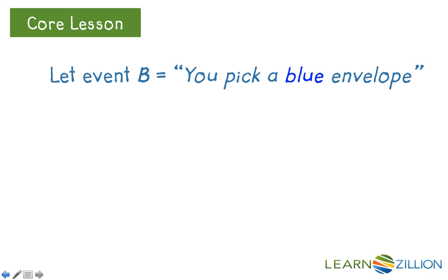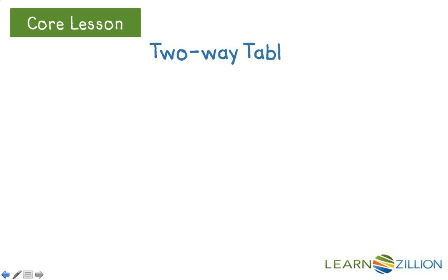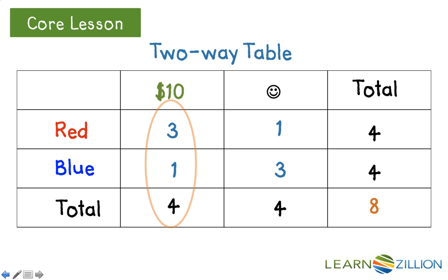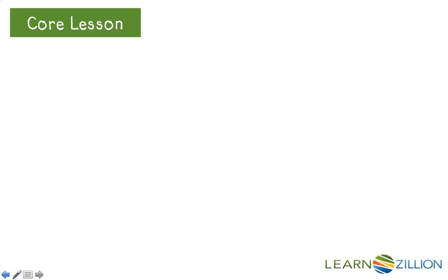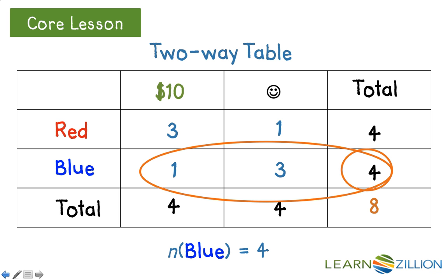Now let's define event B as picking a blue envelope. We can see that there are 4 outcomes in event B, another subset of the sample space. This same information can be gathered from a two-way table. Here we see the column total for obtaining an envelope with $10 in it is 4, and the row total for the number of outcomes in event B — obtaining a blue envelope — is also 4.